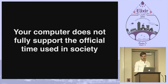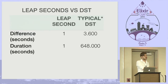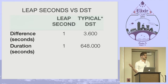What does that mean? It means your computer does not fully support the official time used in society, which is kind of sad. I'm not going to talk much more about leap seconds, because a bigger issue is daylight saving time and time zones in general. If you're wrong about leap seconds, it's just going to be for one second once every 18 months. But if you're wrong about daylight saving time, it could be an hour, and you're going to be wrong for half a year — which is a lot longer.